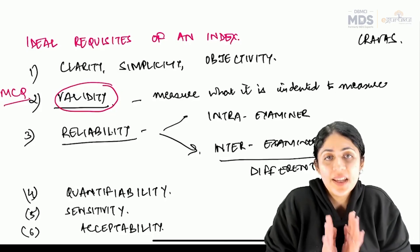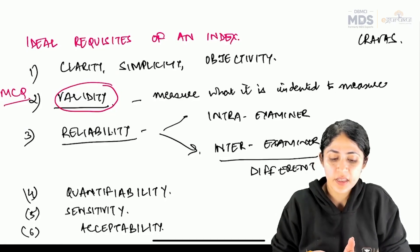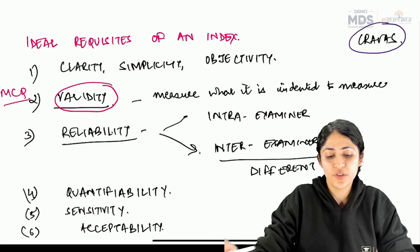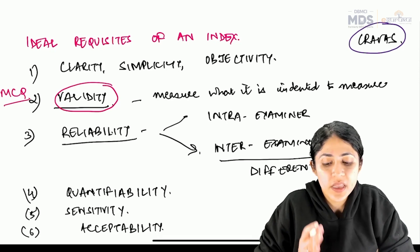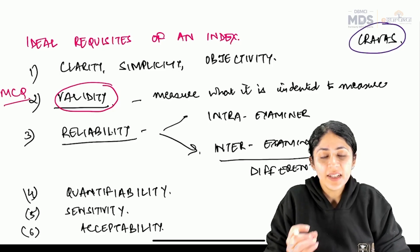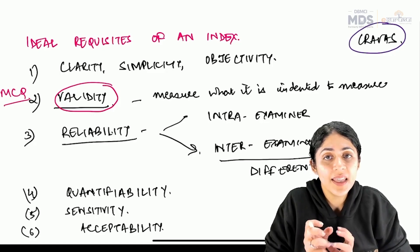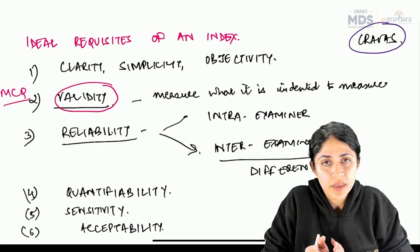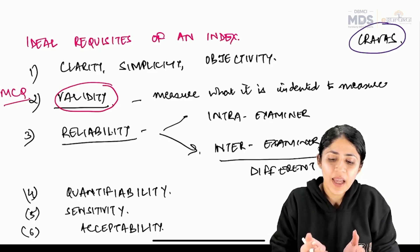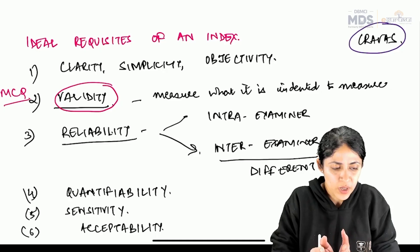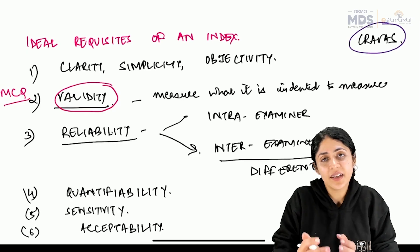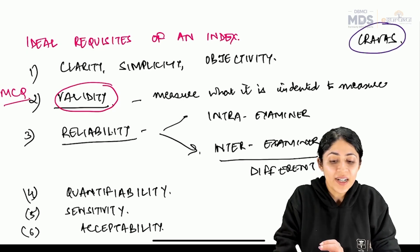So basically, how an index should be — coming to the ideal requisites of an index, it can be studied with a common mnemonic. The first one is clarity, simplicity, and objectivity. Clarity means that the rules can be easily carried in a person's head so the examiner can easily remember and apply them. Simplicity means it can be simple to understand, easy to apply, and no undue time is lost. Objectivity means that the criteria should be objective.